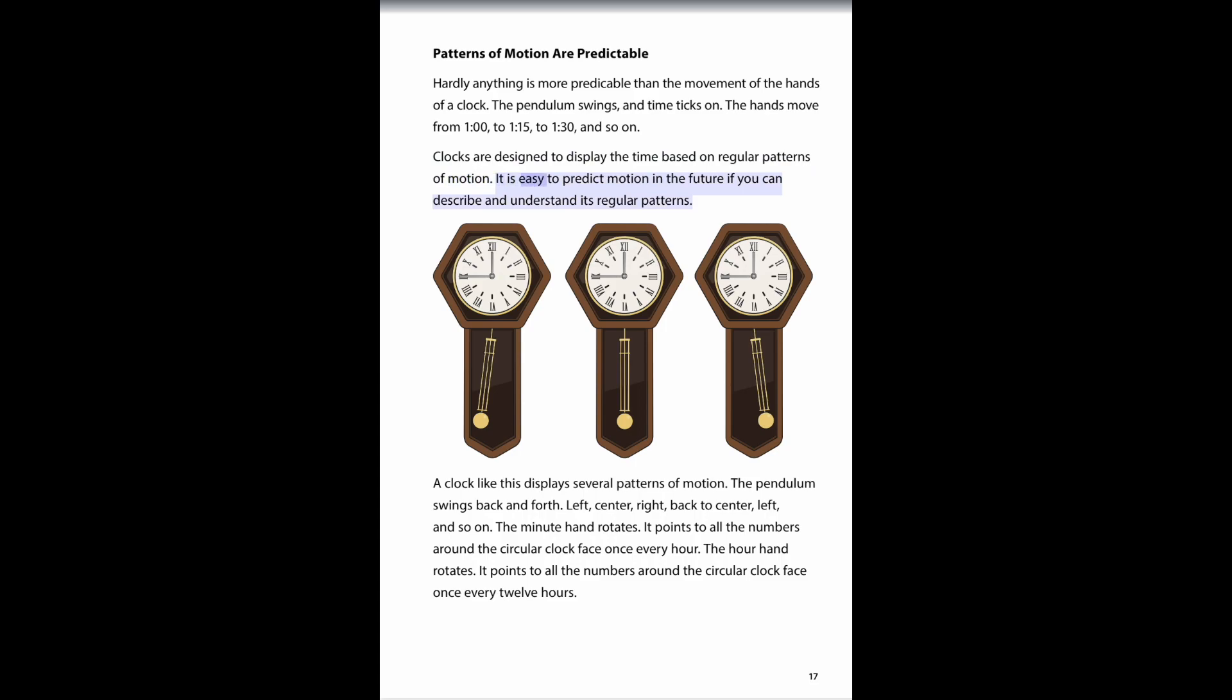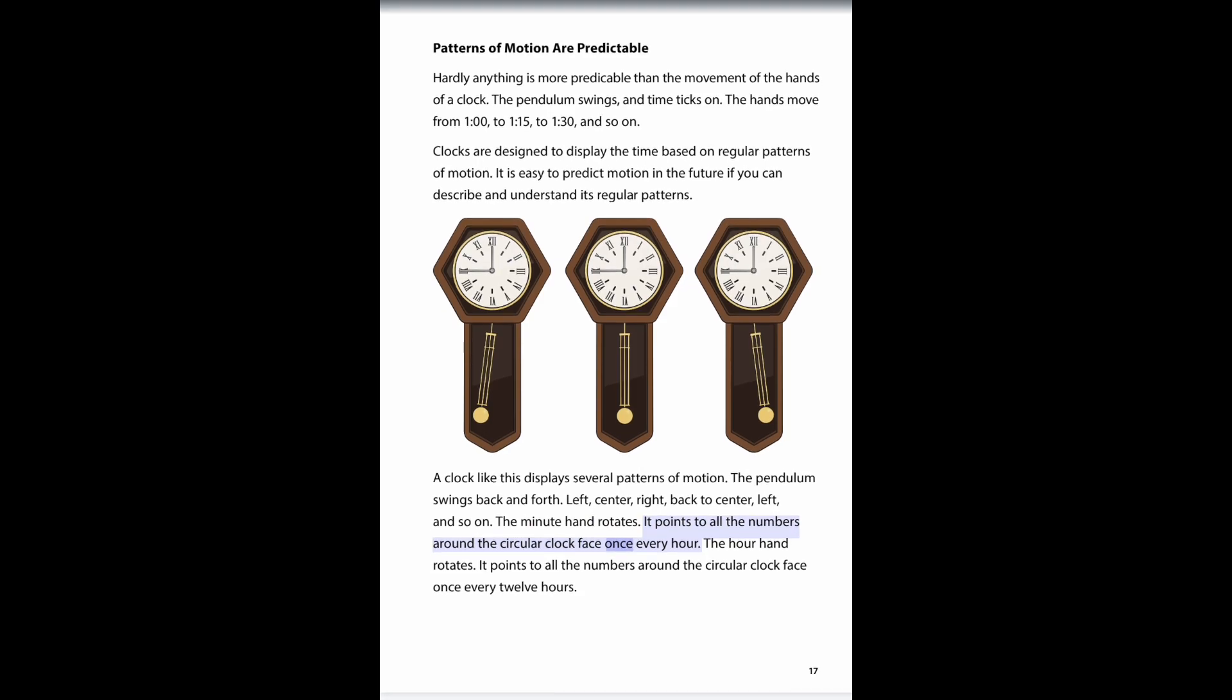It is easy to predict motion in the future if you can describe and understand its regular patterns. A clock like this displays several patterns of motion. The pendulum swings back and forth: left, center, right, back to center, left, and so on. The minute hand rotates. It points to all the numbers around the circular clock face once every hour.